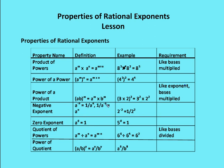If I have 1 over a to the negative n, that leaves me with a to the n. So 2 to the negative 2 is the same as 1 over 2 squared, or 1 over 4. Zero exponent property: anything to the 0 is going to be equal to 1. So a to the 0 is equal to 1, 5 to the 0 is equal to 1, 6 to the 0 is equal to 1, and so on.